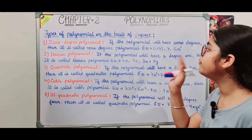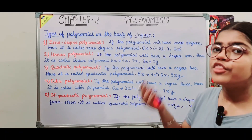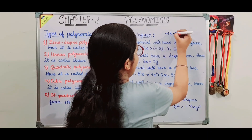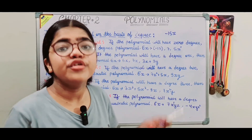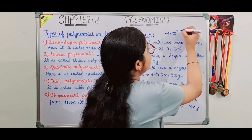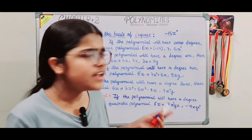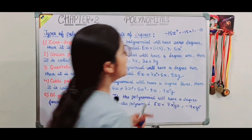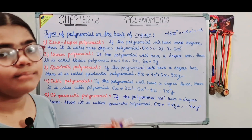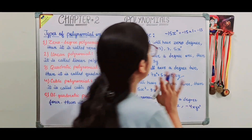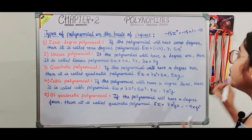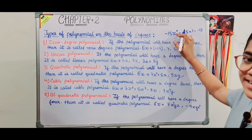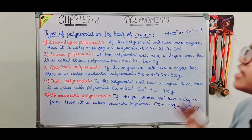First, the zero degree polynomial: if the highest power of the variable in the polynomial is 0, then it is called a zero degree polynomial. For example, minus 15 has no variable, so we treat it as minus 15 times x to the power 0. Since x to the power 0 equals 1, the highest power is 0. Similarly, 7 and 5x to the power 0 are also zero degree polynomials.